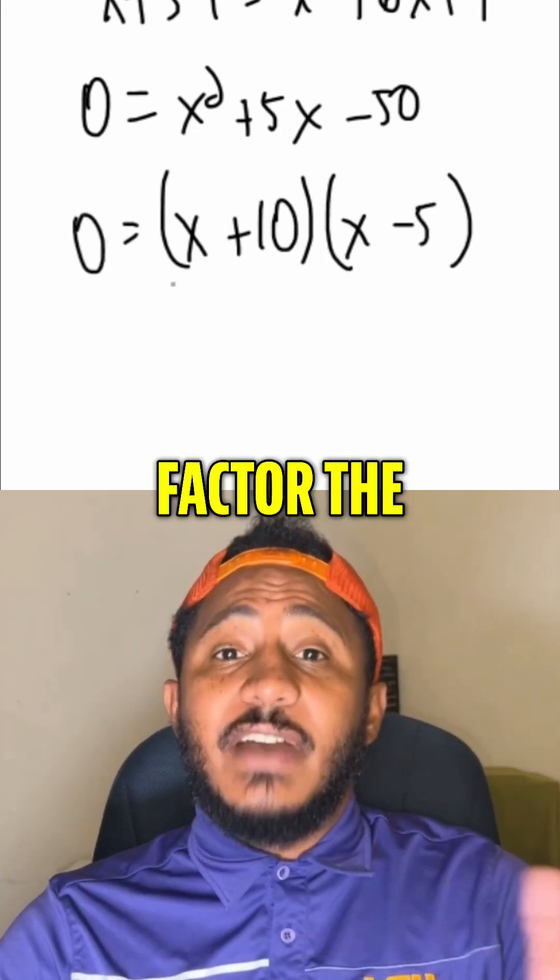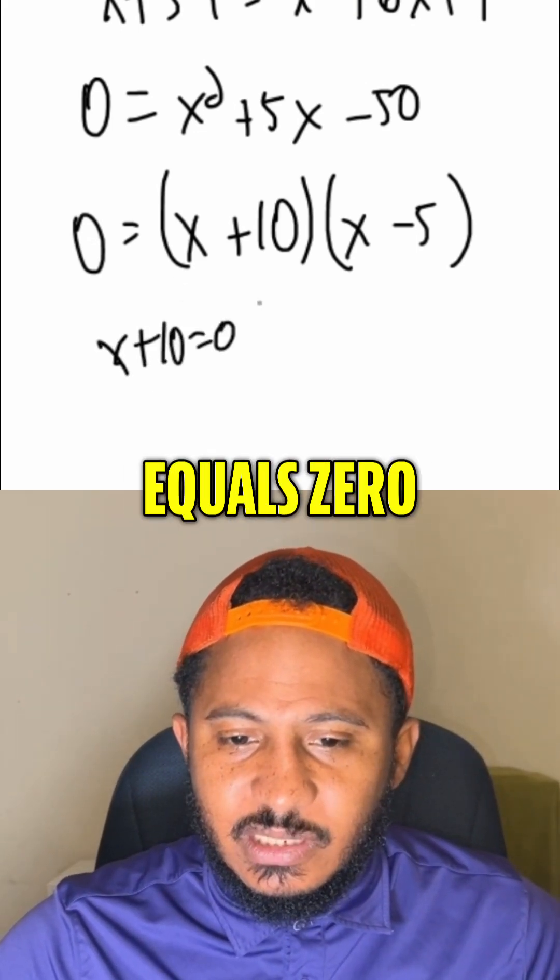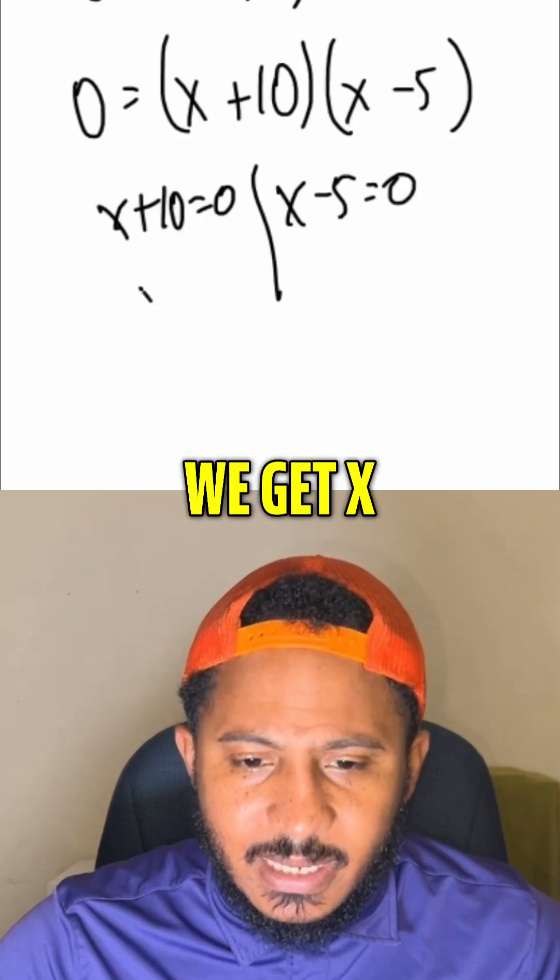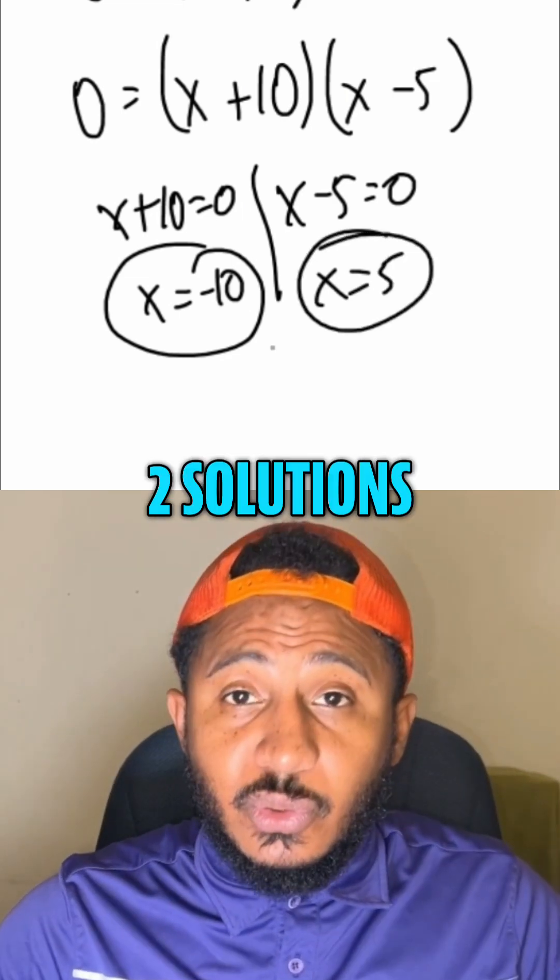So we got zero on one side, factor the other side, set each factor equal to zero, so x plus 10 equals zero, and x minus 5 equals zero. Solving each of these separately, we get x equals negative 10. And here, x equals positive 5. So those will be our two solutions.